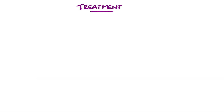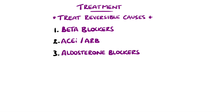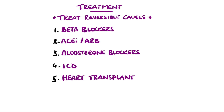The treatment of dilated cardiomyopathy involves treating any reversible identified causes, and in persistent or idiopathic cases, the treatment is primarily medical. It is similar to treatment of other causes of systolic heart failure, including the use of beta blockers, ACE inhibitors, or angiotensin receptor blockers, and aldosterone blockers may be used in cases where patients fit into class 2 or 4 of the New York Heart Association heart failure class. Implantable cardioverter defibrillators are placed in patients with a high risk of arrhythmias, and heart transplant is considered in patients who are not responding to medical therapy. Survival rates post-transplant have been shown to be as high as 90% at one year, and over 50% at 20 years.